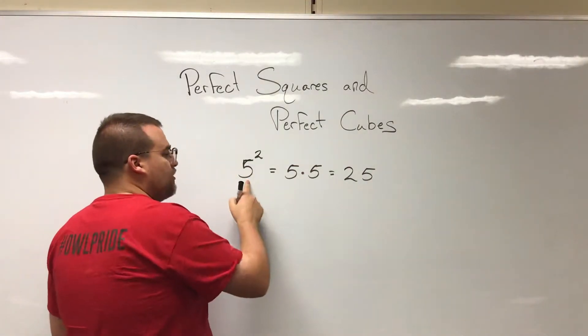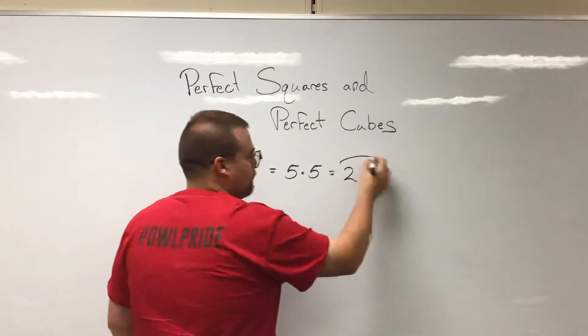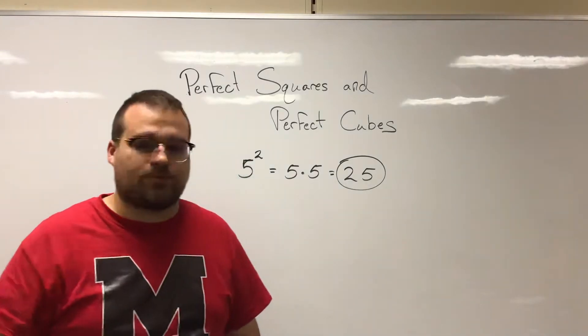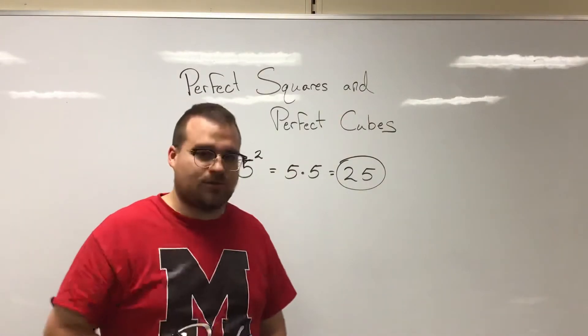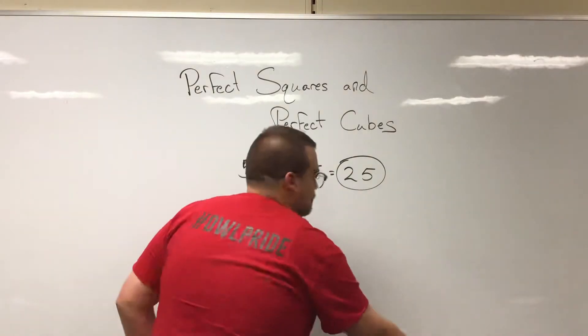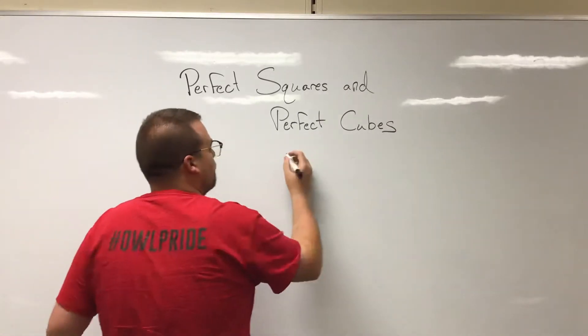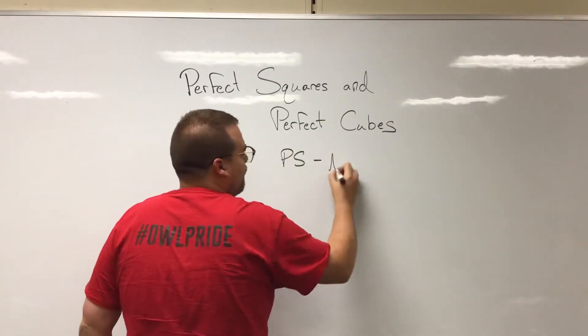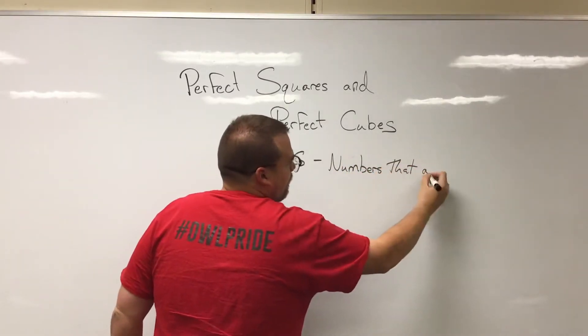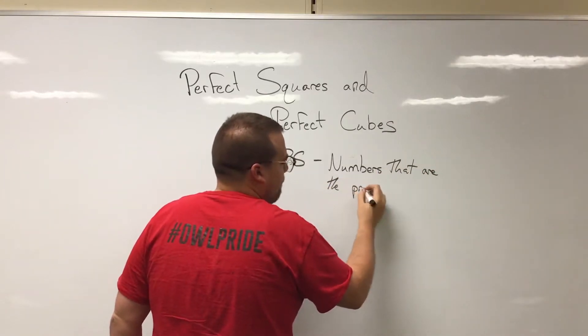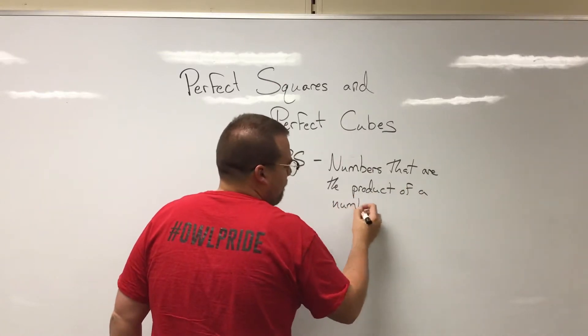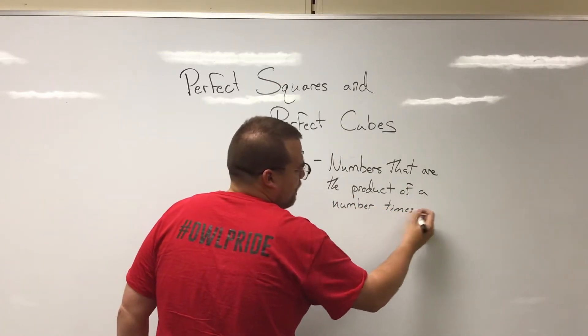The answers to numbers squared, in this case 25, those are what we call perfect squares - numbers that are the product of a number times itself. I'm actually going to write that definition down. Perfect squares are numbers that are the product of a number times itself.